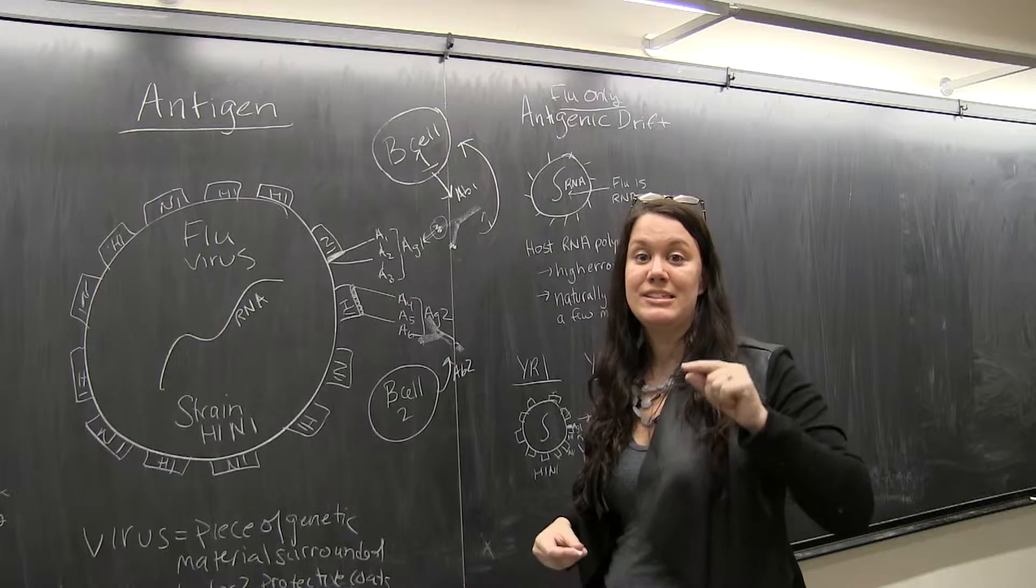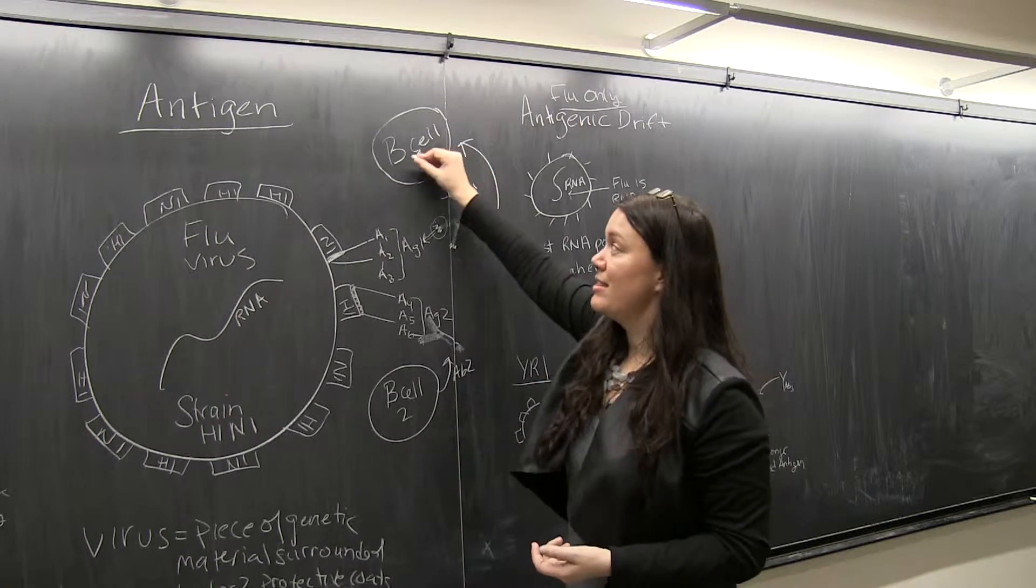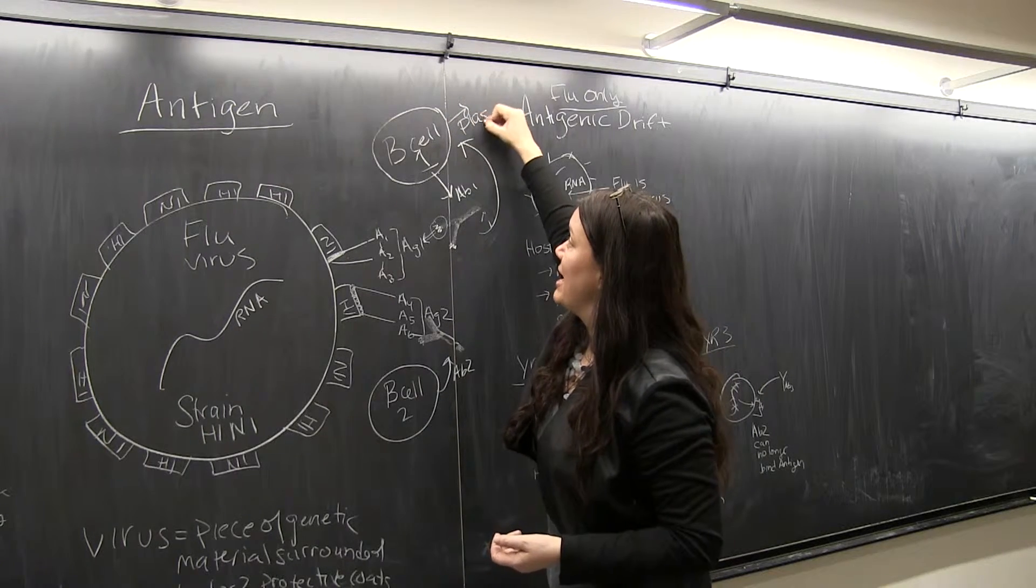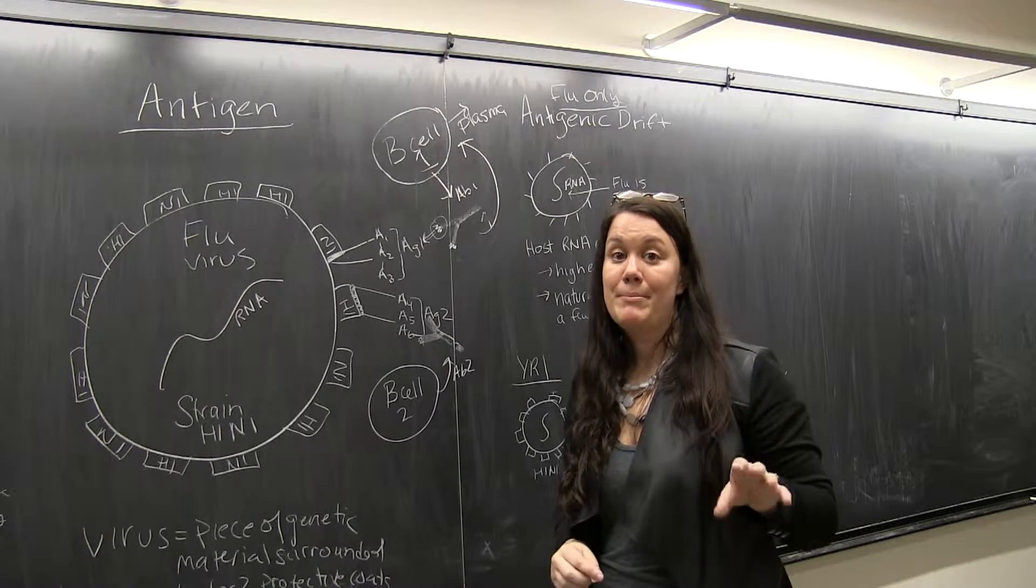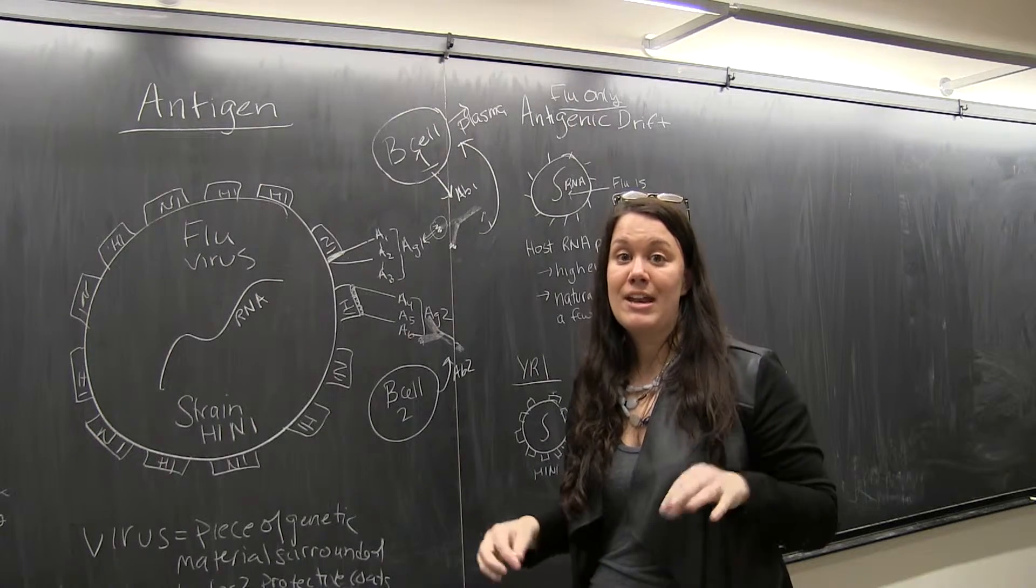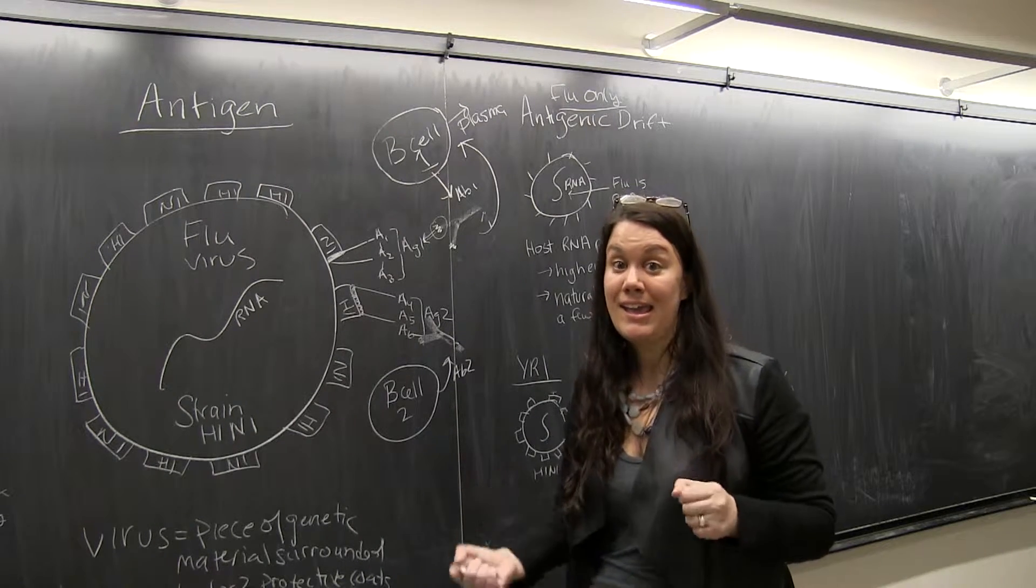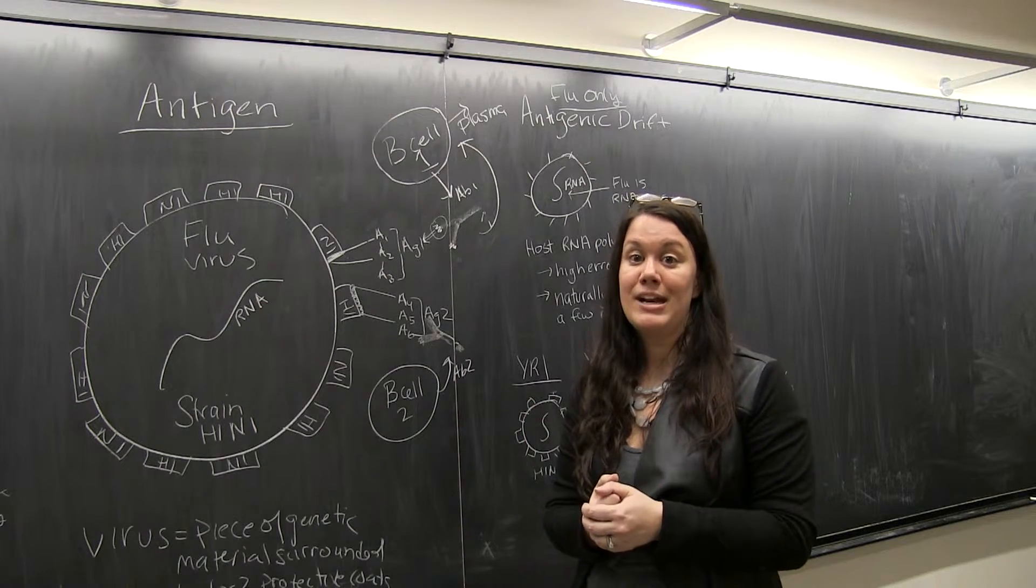We need this B cell to divide and we need it to make tons of antibodies. So then this B cell will differentiate or specialize into plasma cells. Remember, plasma cells are the antibody factories. So once they get the signal that hey, this is a good kind of antibody we need, they'll start to make those antibodies super fast.